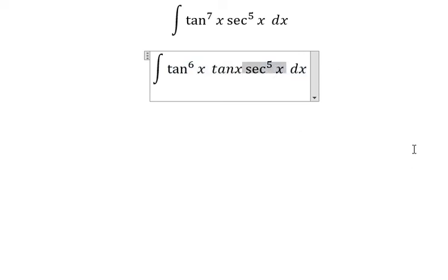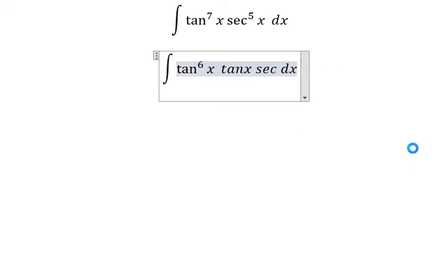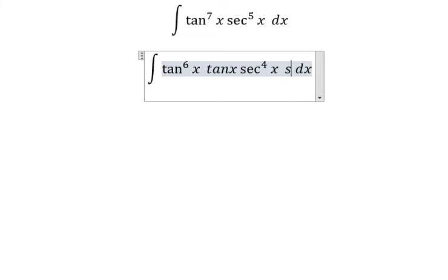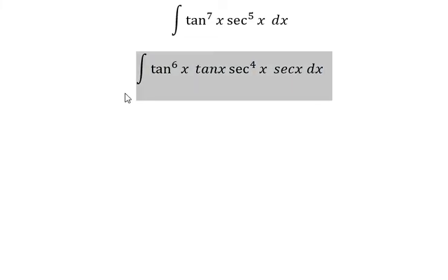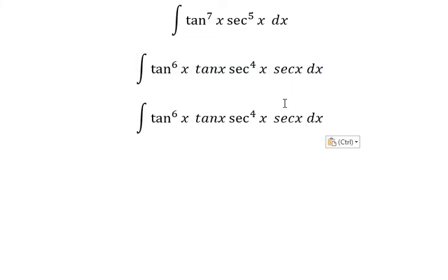About this one in here, we change secant of x to the power of 4 times secant of x. So we put tan x and secant of x to the right.